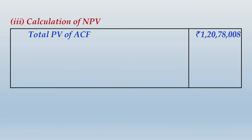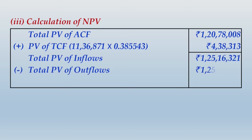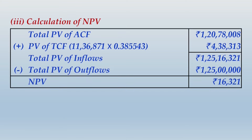Now let us compute the NPV. The present value of annual cash flows is 1 crore 20 lakh 78 thousand 8. To this we add the present value of the terminal cash flow — we computed the terminal cash flow in the earlier working, and apply the present value factor for the last year. The aggregate of these two present values gives the total present value of inflows. From that you subtract the total present value of outflows and you get the resulting net present value, which is positive. So please write up this entire calculation — that will be the end of the first assumption.